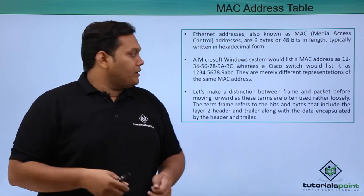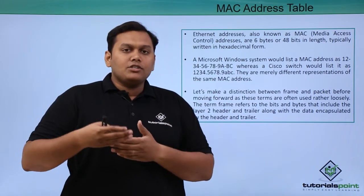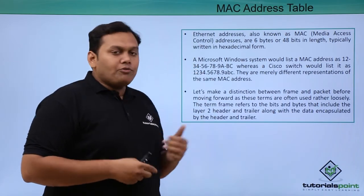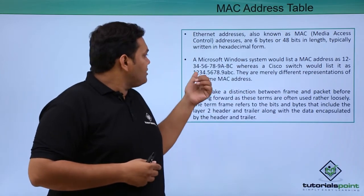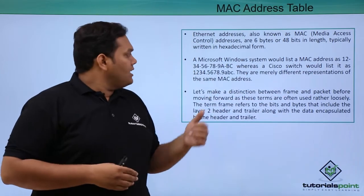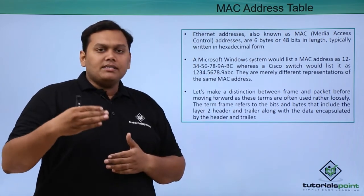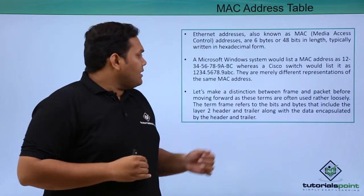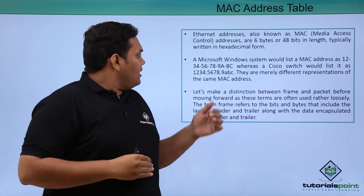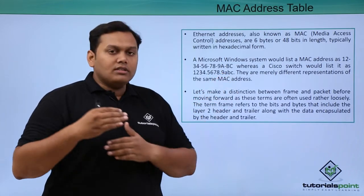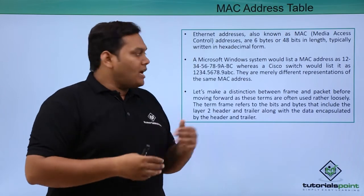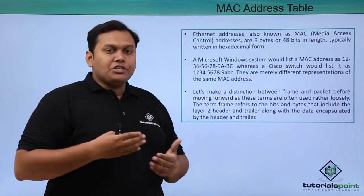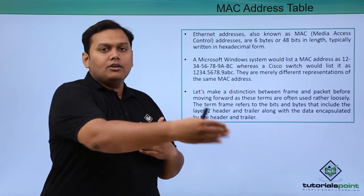In hexadecimal form, a Microsoft Windows system would list MAC addresses like 12-34-56-78-9a-bc, whereas a Cisco switch would list the MAC addresses in the format 1234.5678.9abc. These are merely different representations of MAC addresses between the switch and the Windows system.